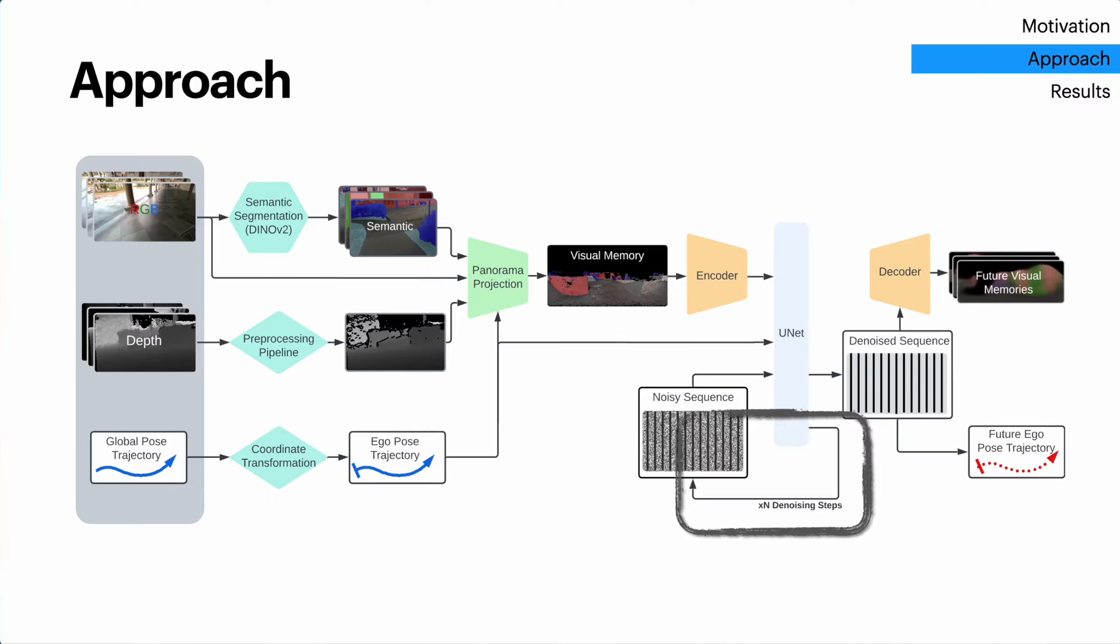Through repeated sampling, we obtain a discrete distribution of plausible trajectories that the human could take. This is crucial for capturing the inherent uncertainty and multimodality of human behavior.